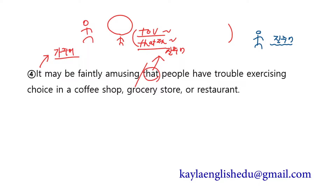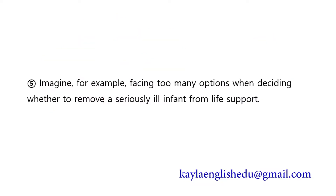that절 내용을 보면 — 사람들은 have trouble -ing: '뭐뭐 하는데 어려움을 겪다'. exercise choice가 '선택하다'예요. 커피숍이나 식료품점 또는 레스토랑에서 선택하는 데 어려움을 겪는다는 것은 faintly amusing 상당히 재미있다고 할 수 있죠. Imagine for example facing too many options when deciding whether to remove a seriously ill infant from life support.